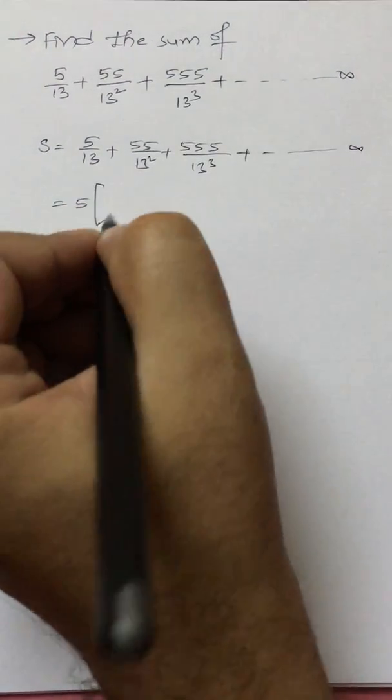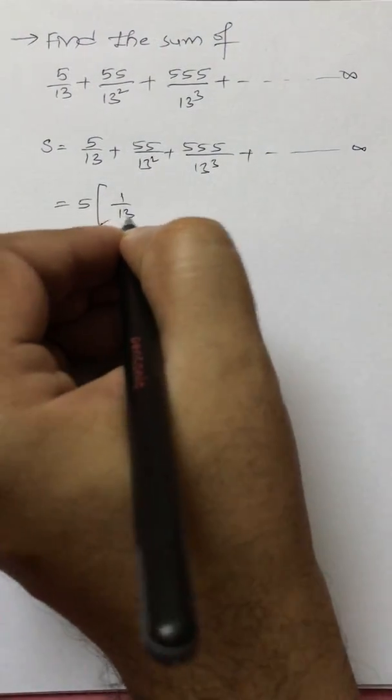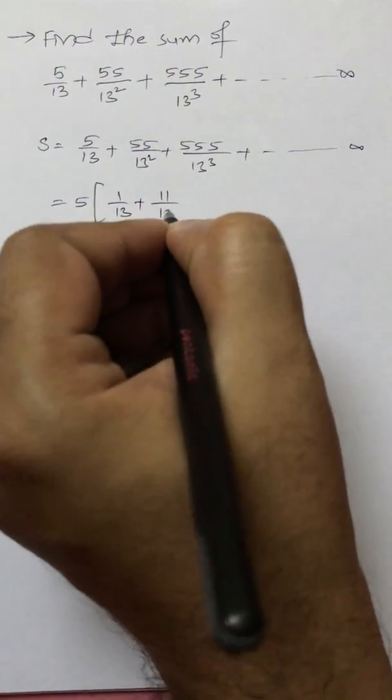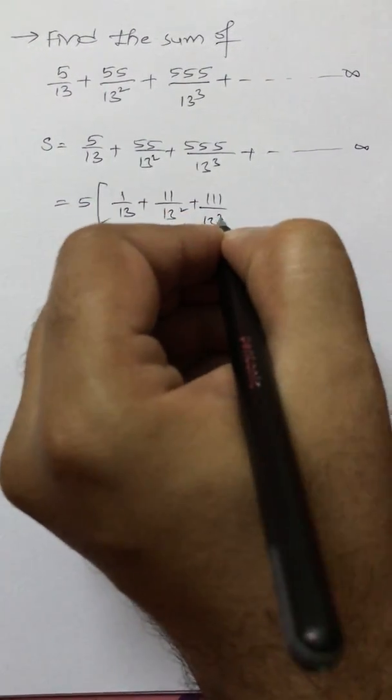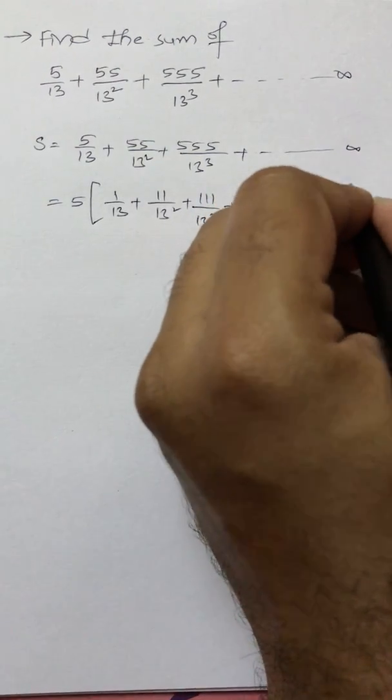Here we can take 5 common. If I take 5 common, we get 5 times [1/13 + 11/13² + 11/13³ + ... to infinity].